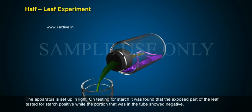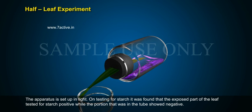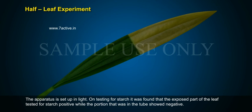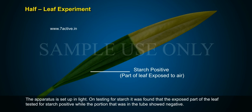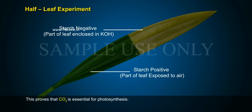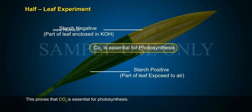The apparatus is set up in light. On testing for starch, it was found that the exposed part of the leaf tested positive for starch, while the portion inside the tube showed negative. This proves that CO2 is essential for photosynthesis.